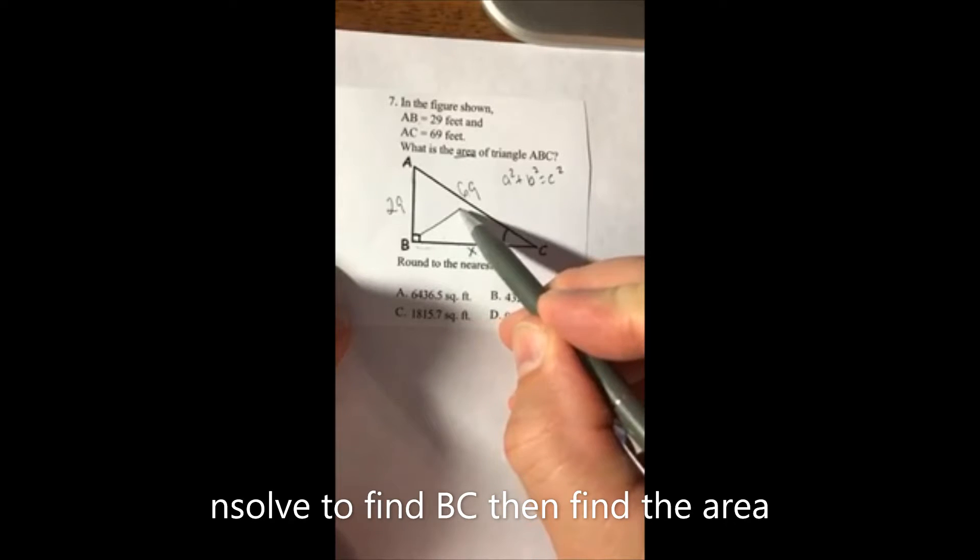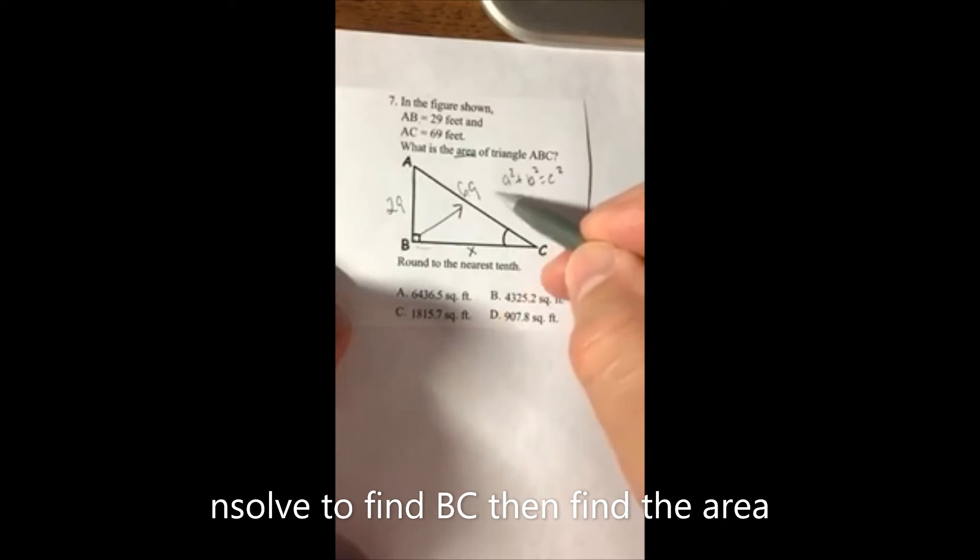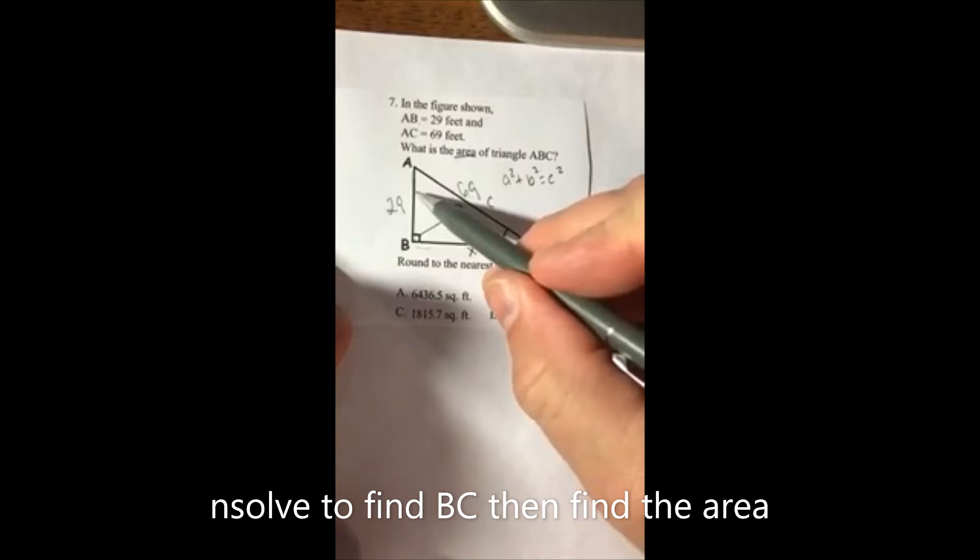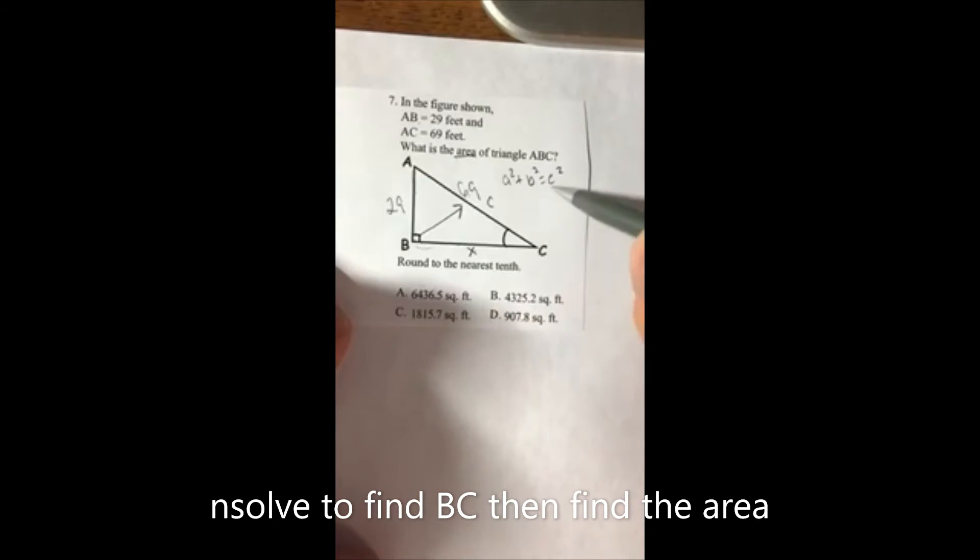C is the side opposite the 90-degree angle. This is your c, this is your a and b. Go ahead and plug it in.